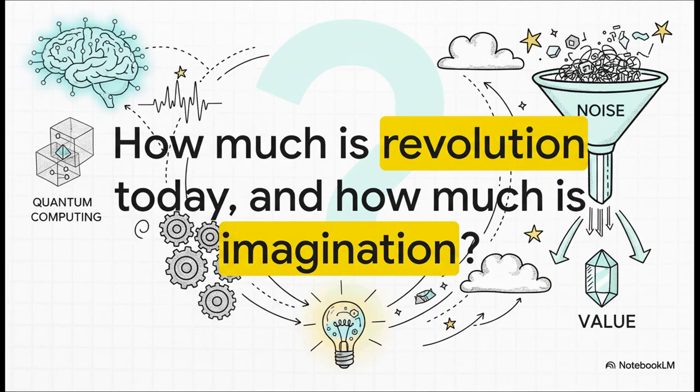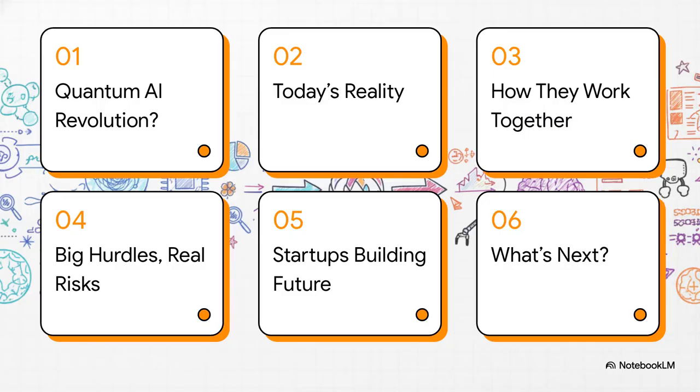So in this explainer, we're going to cut right through all the noise. We'll figure out what's really working right now, what's just a cool idea for the future, and where the actual value is hiding when you bring these two giants together. So here's our game plan. We'll kick things off with today's reality for both technologies. Then we'll see how they can actually work together. We'll also tackle the big hurdles and risks. No sugarcoating here. After that, we'll look at some startups already building this future. And finally, we'll peek over the horizon to see what's coming next.